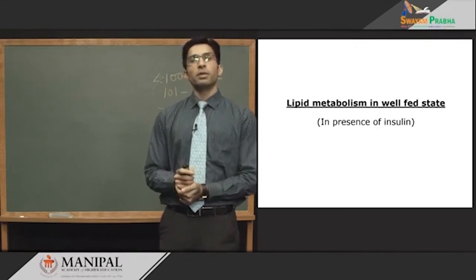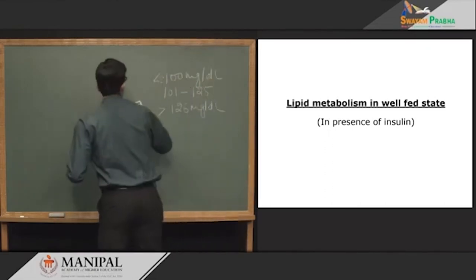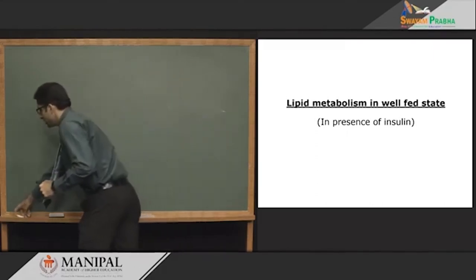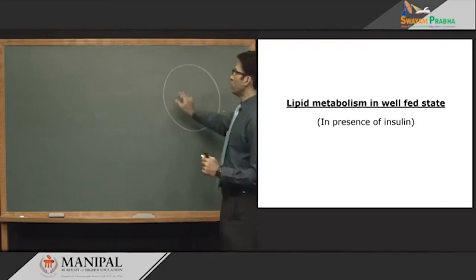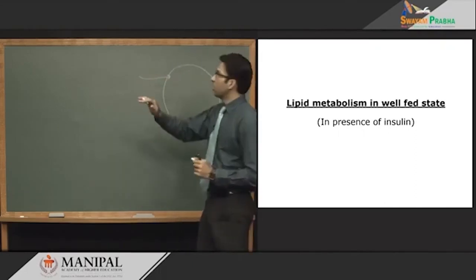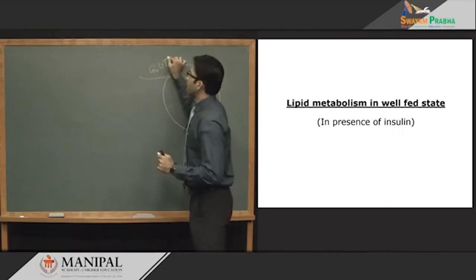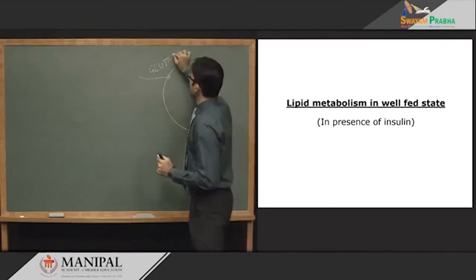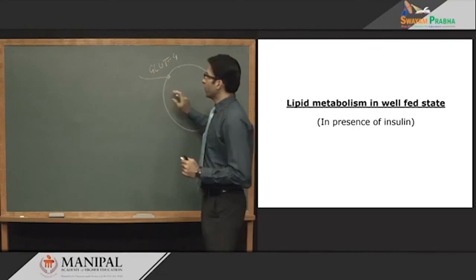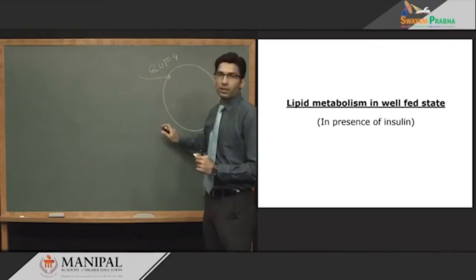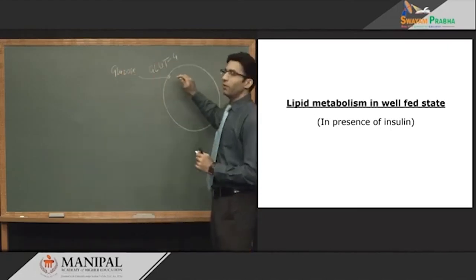Now let us see lipid metabolism in the well-fed state in detail. In the well-fed state, insulin causes increased uptake of glucose inside adipose tissue. GLUT4 receptors, present in adipose tissue and skeletal muscle, are insulin sensitive — in the presence of insulin they come to the membrane surface and allow more glucose entry. Regarding lipid specifically, chylomicrons bring dietary lipid formed in intestinal mucosal cells.